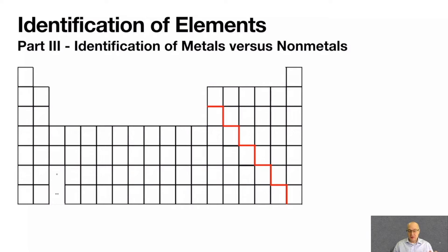Metals are on the far left of the periodic table. Nonmetals are on the right of the periodic table.